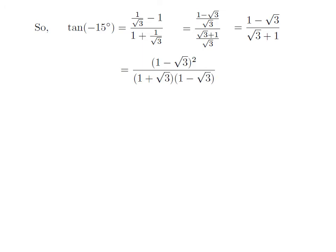As multiplying the numerator and the denominator by the same number or expression does not change the fraction, so let us multiply the numerator and the denominator by 1 minus square root of 3. Now the numerator becomes the square of 1 minus square root of 3, and the denominator is 1 plus square root of 3 multiplied by 1 minus square root of 3.